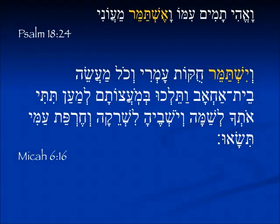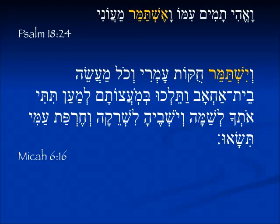In Psalm 18:24 we see eshtamer — the concept is 'I will guard myself from my sin,' so it's imperfect. It's not et-shamar, it's eshtamer. In Micah 6:16 we have a third person masculine singular imperfect: yishtamer. The shin comes before the tav, and it means 'he guarded or kept the laws of Omri.'